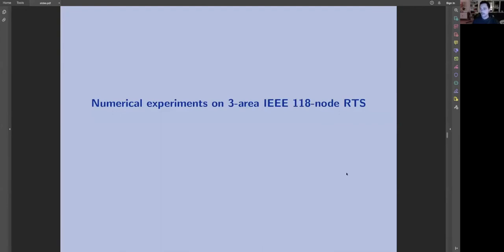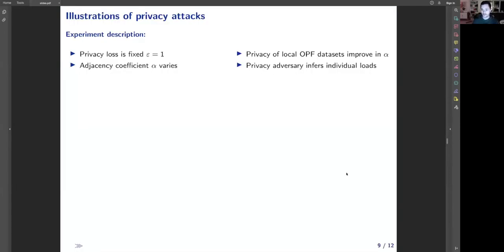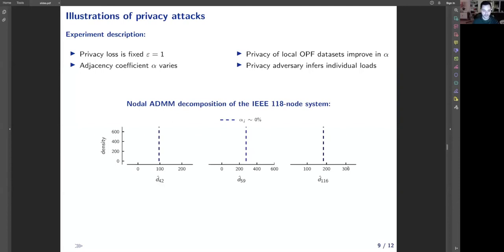To assess the theoretical privacy properties, we run numerical experiments on standard test case. Our experiment settings are standard. We vary the adjacency coefficient to improve privacy property of the algorithm, and we use adversarial inference tools to assess these privacy properties. When we decompose the network into 118 nodes, we let adversaries infer the loads at these three nodes. When we don't use noise in computations, adversaries successfully retrieve the values of the loads.